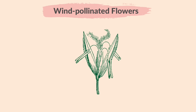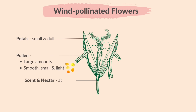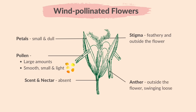The structural adaptations of a wind-pollinated flower are: petals are small and dull; pollen is present in large amounts to increase the chance of successful pollination; pollen grains are smooth, small, and light so they are easily blown by the wind; scent and nectar are absent; the stigma is feathery to catch drifting pollen grains and is positioned outside the flower; and the anther is outside the flower, swinging loosely to release pollen grains easily.